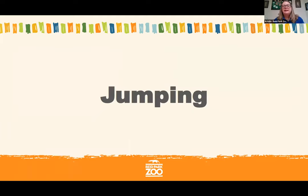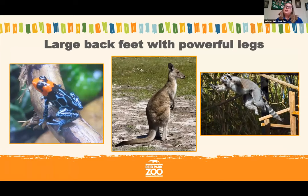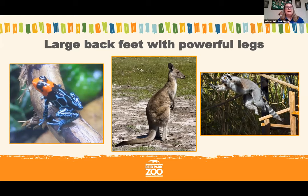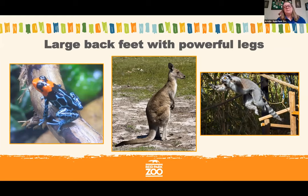Jumping is a bit different from digging. Animals that jump don't always have big or sharp claws — they usually have large back feet and really powerful back legs, like this dart frog on the left, a kangaroo in the middle, or a ring-tailed lemur on the right. Humans also have strong legs and large back feet; we may not jump quite as far as a kangaroo, but our feet and legs can help us jump as well.